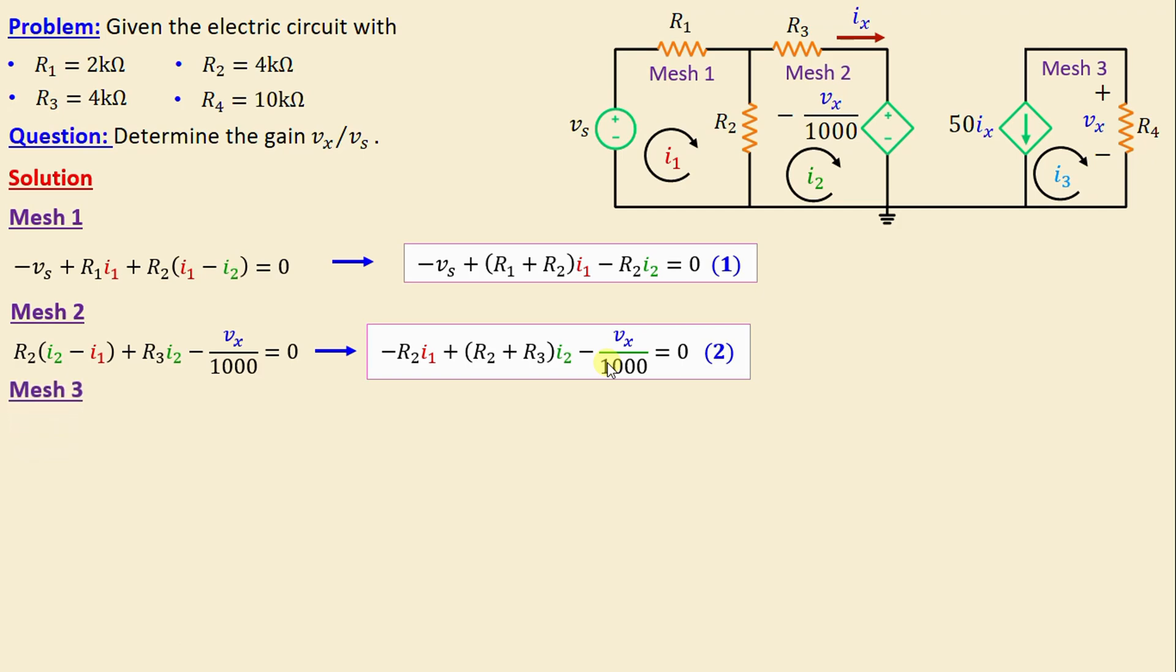Let's move on to mesh 3. We can see here in mesh 3 that I3 is equal to negative 50 Ix. And according to Ohm's law, I3 is equal to Vx over R4. So, equation 3 and 4 gives Vx over R4 is equal to negative 50 Ix.